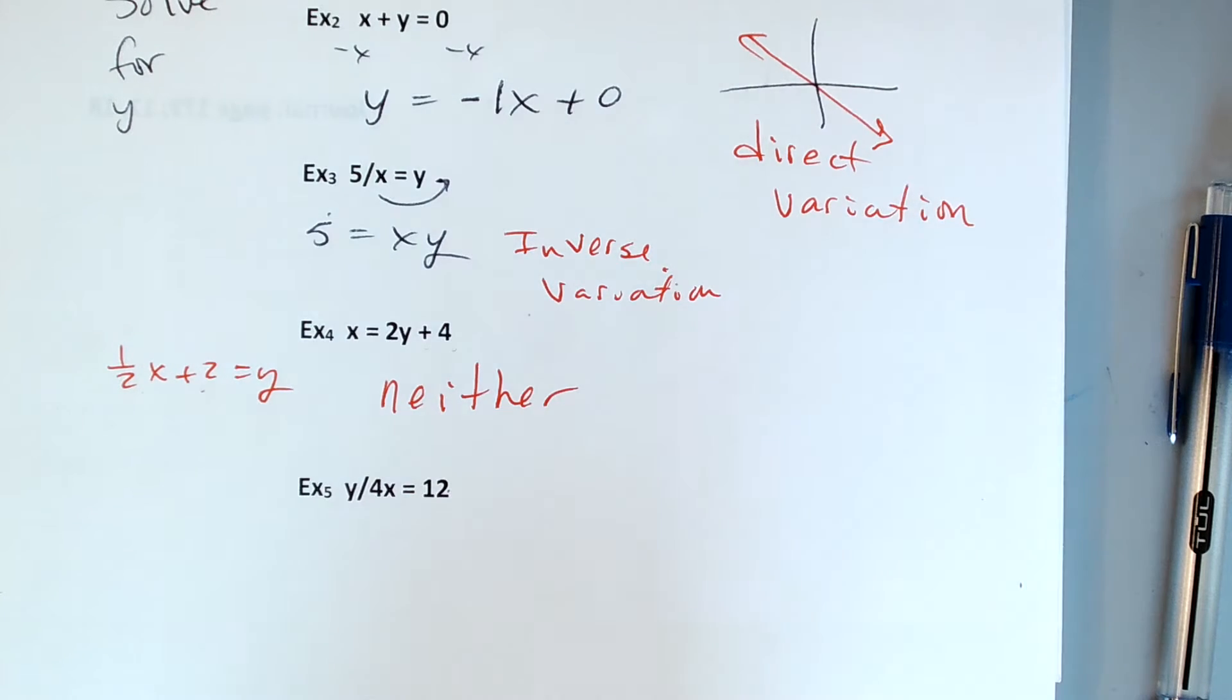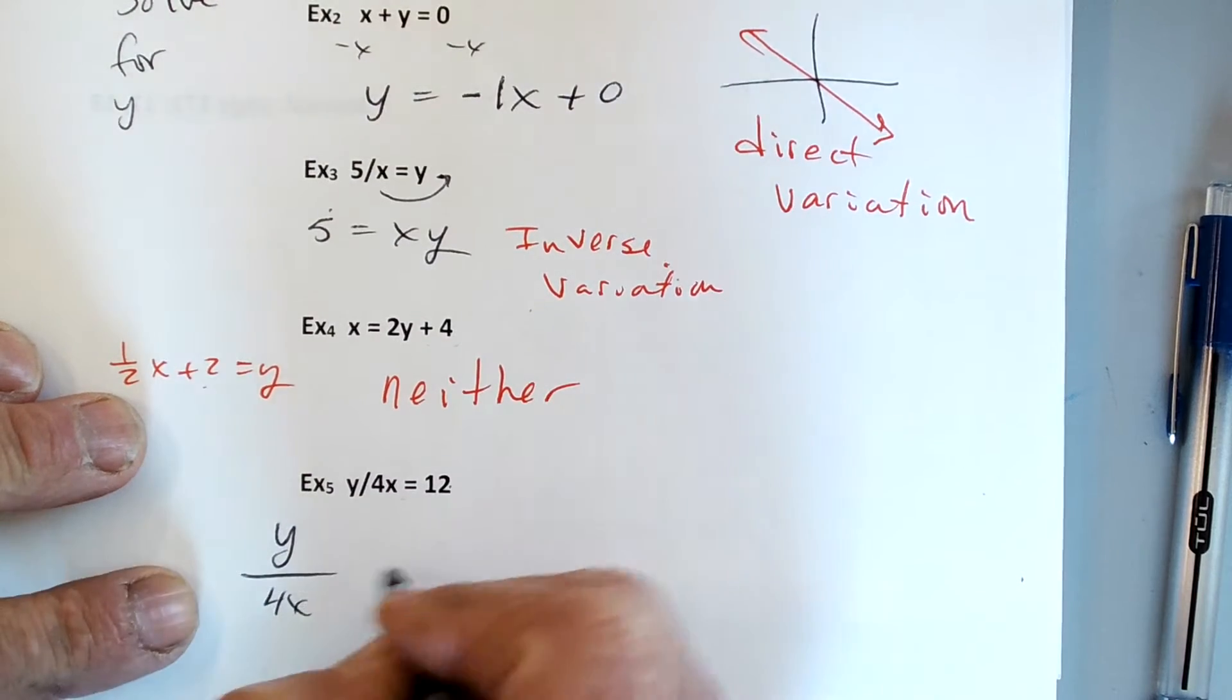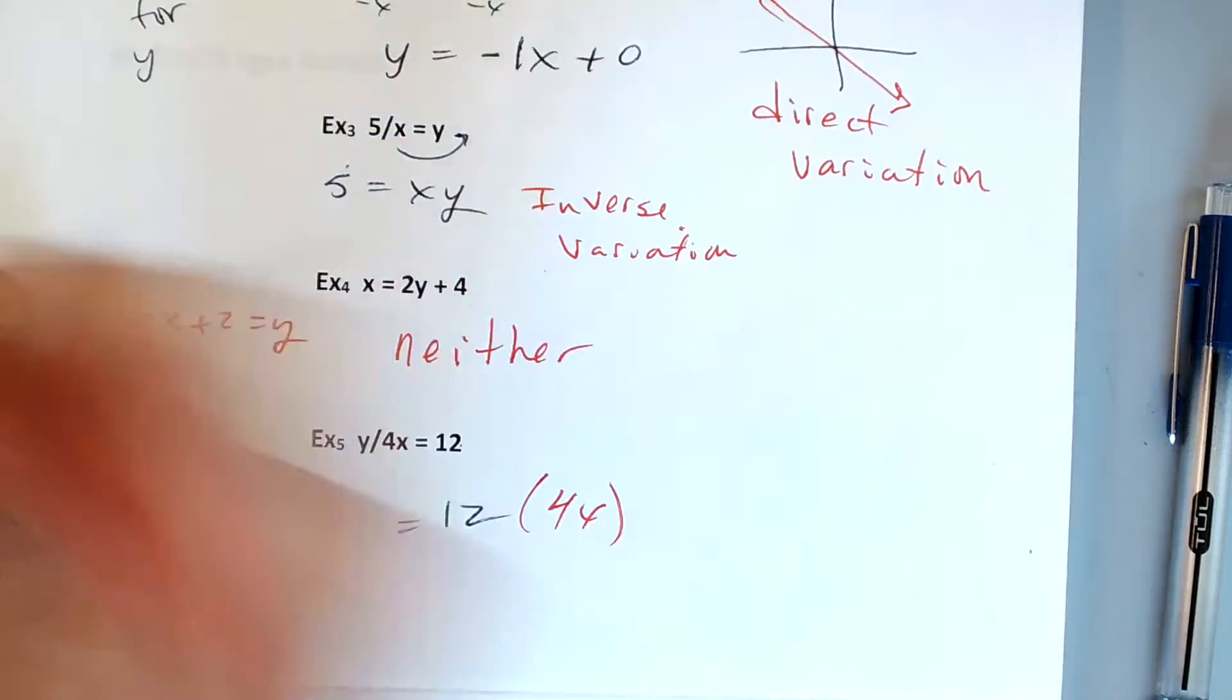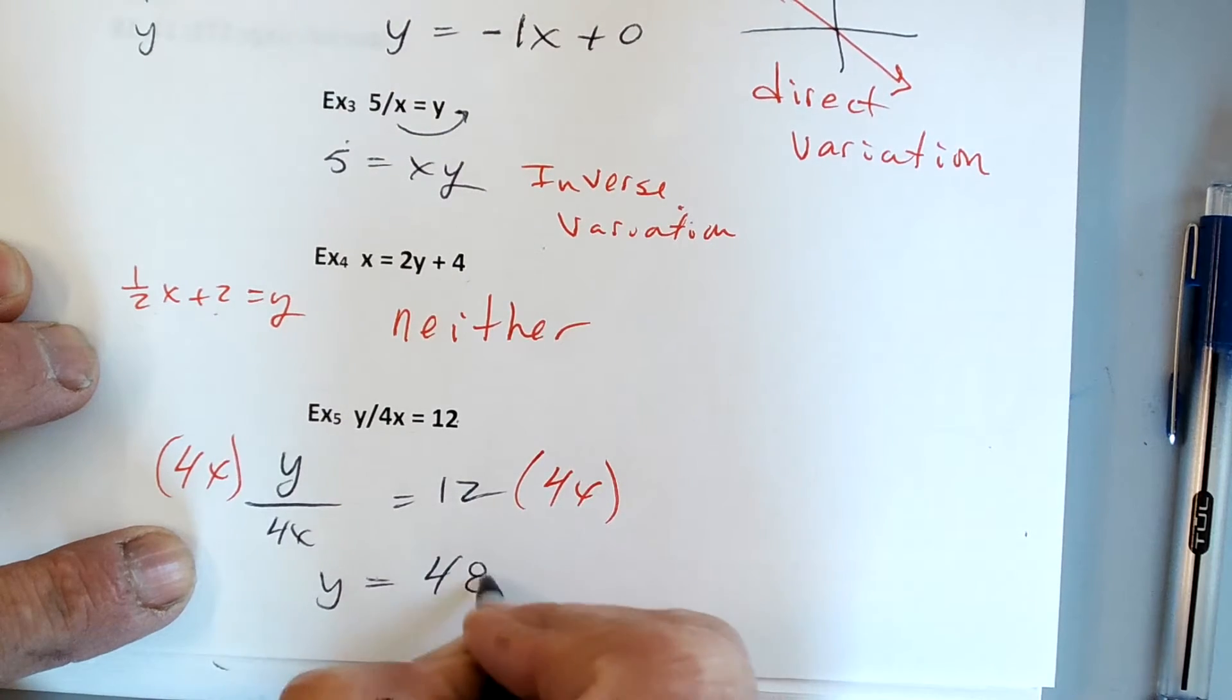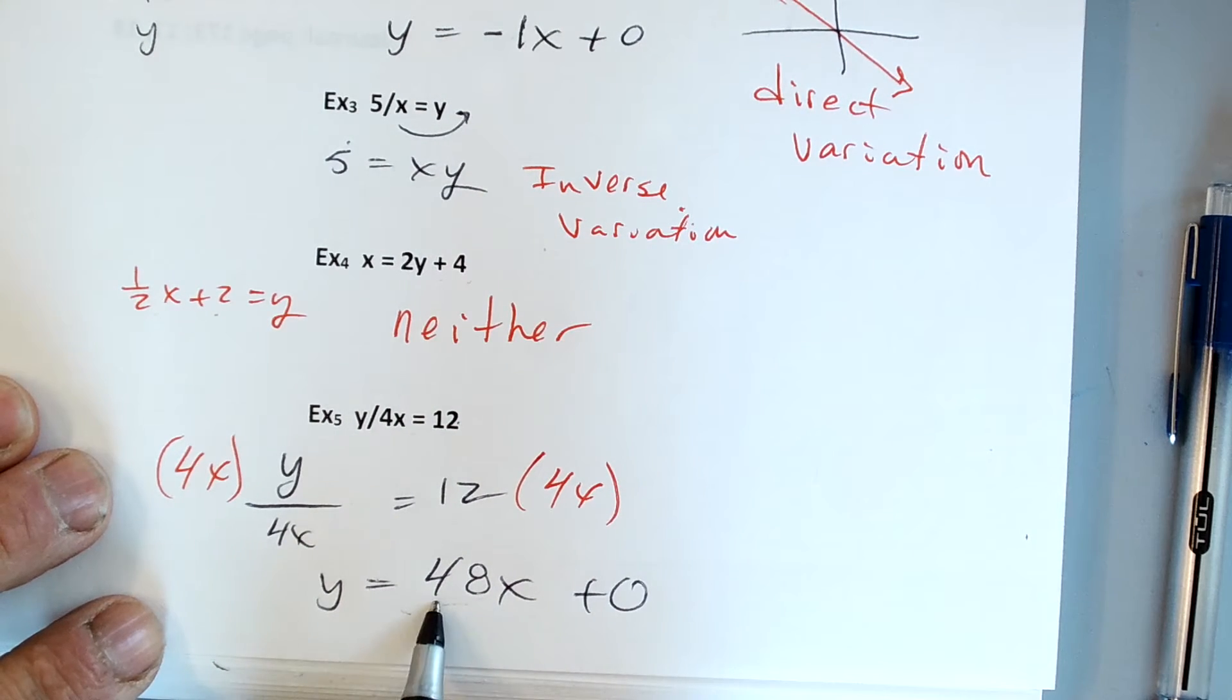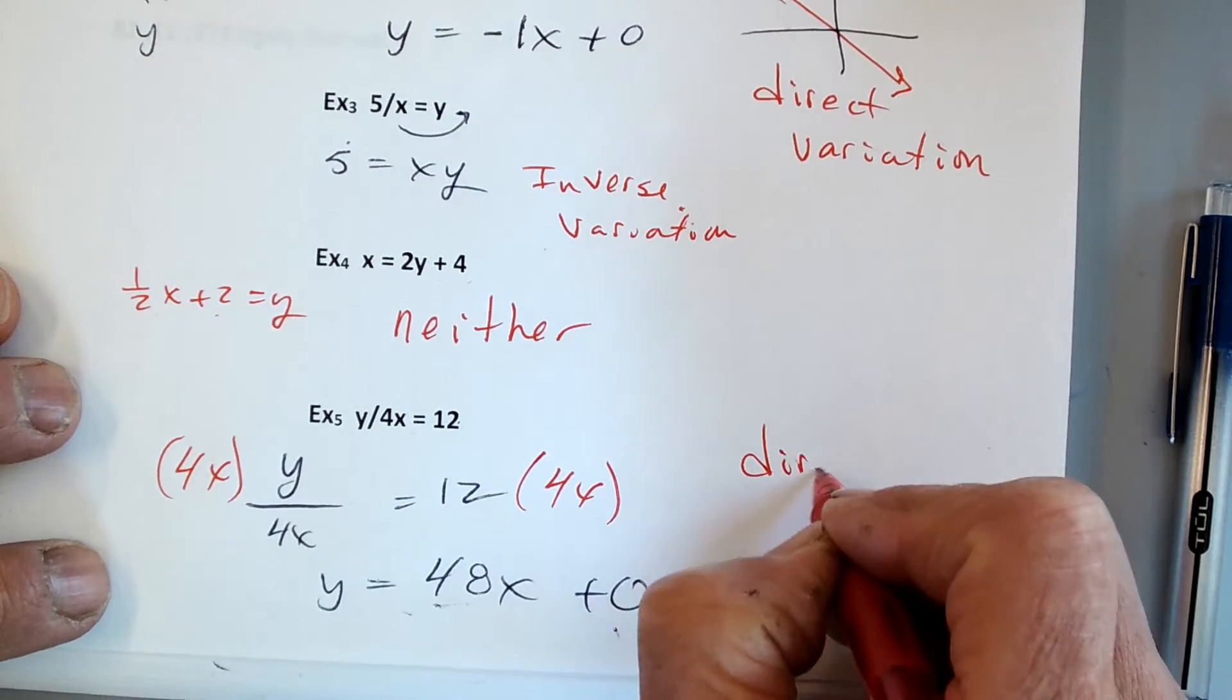Example 5: if I were to simplify this a little bit, if I multiply by 4x both sides, I'm going to rewrite this as y equals 48x. At first I thought that was neither, but now I'm looking at it, and it looks like direct. It's got a number here, put the invisible 0 there to help me out, so that one's definitely direct variation.